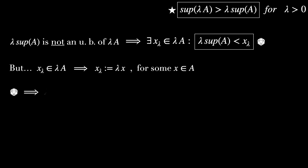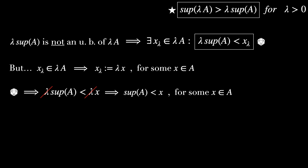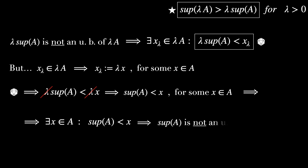Using the icosahedron inequality, we observe that lambda supremum of A is less than lambda x. Simplifying the two lambdas on both sides, we get that the supremum of A is less than x, for some x in A. In other words, there exists an element x in A such that the supremum of A is less than x, implying the supremum of A is not an upper bound of A. But by definition, the supremum is always an upper bound — this is a contradiction.